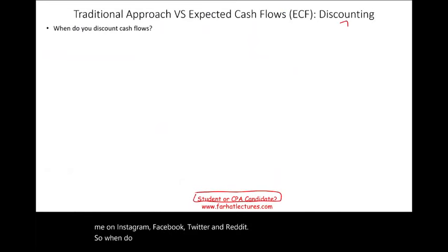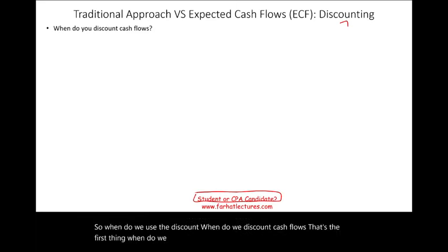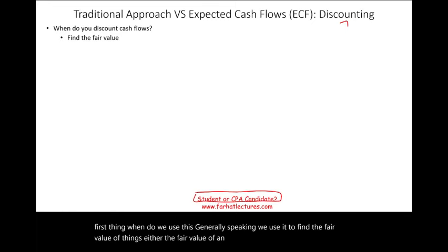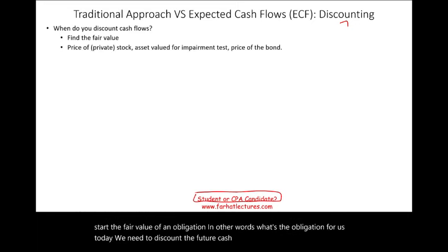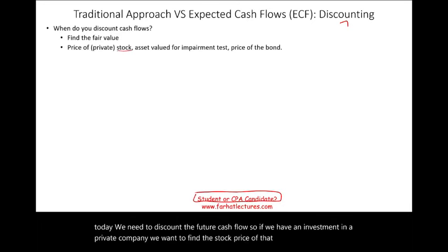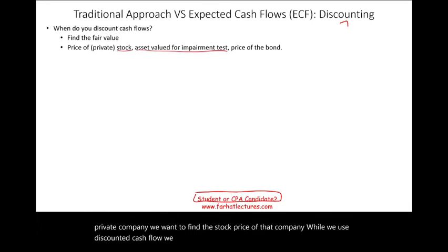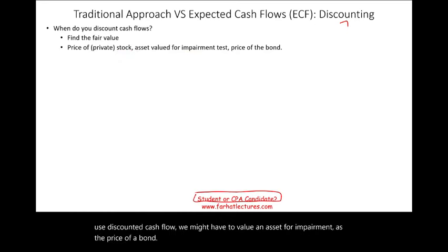So when do we use discounting? When do we discount cash flows? Generally speaking, we use it to find the fair value of things — either the fair value of an asset, the fair value of a privately held stock, or the fair value of an obligation. What's the obligation worth to us today? We need to discount the future cash flow. So if we have an investment in a private company and want to find the stock price, we use discounted cash flow. We might have to value an asset for an impairment test, or the price of a bond. Many assets and many liabilities require that discounting.